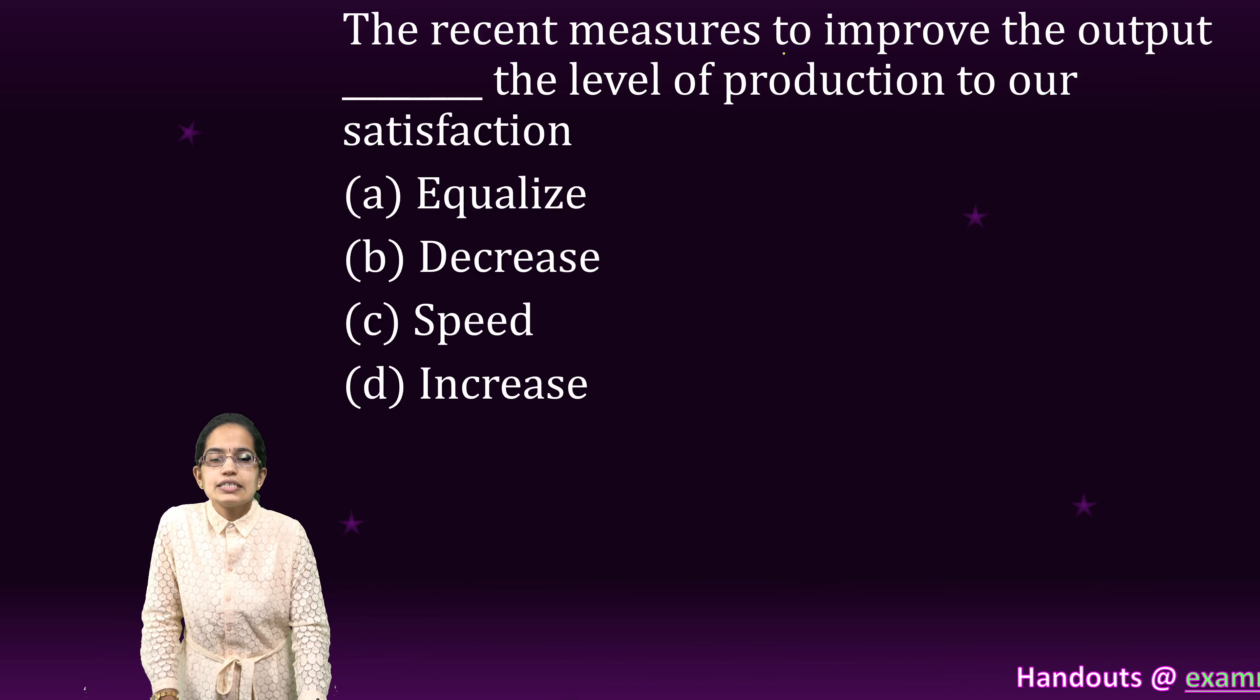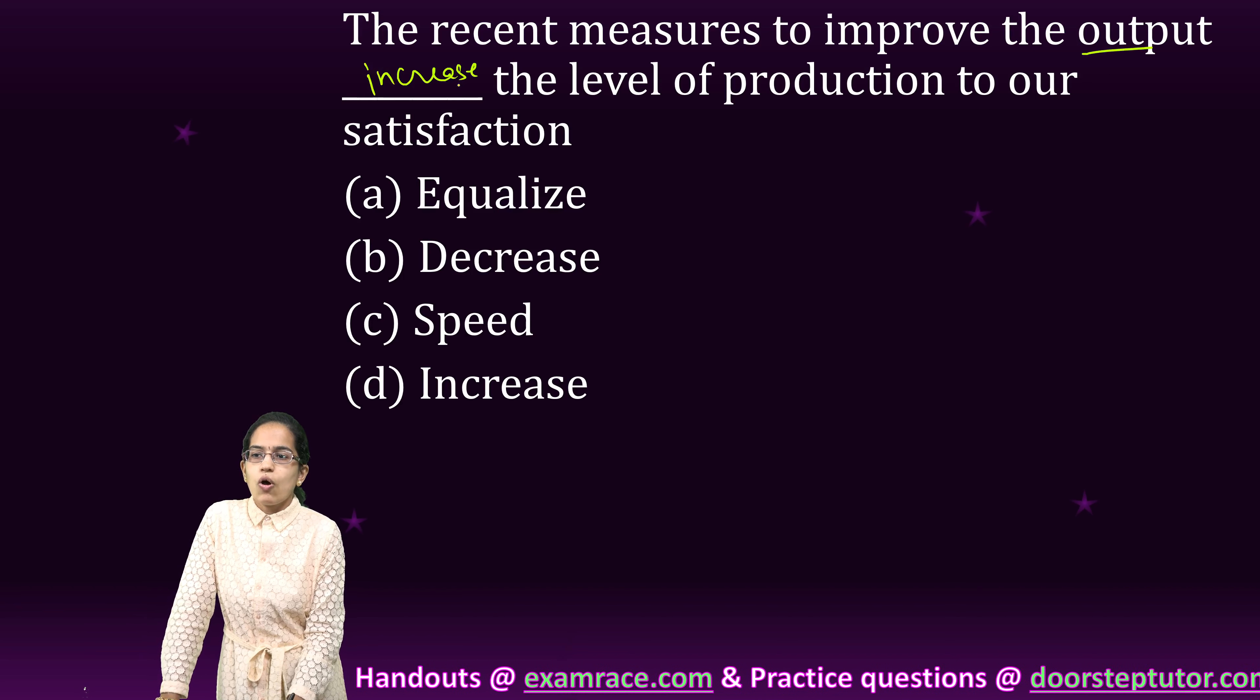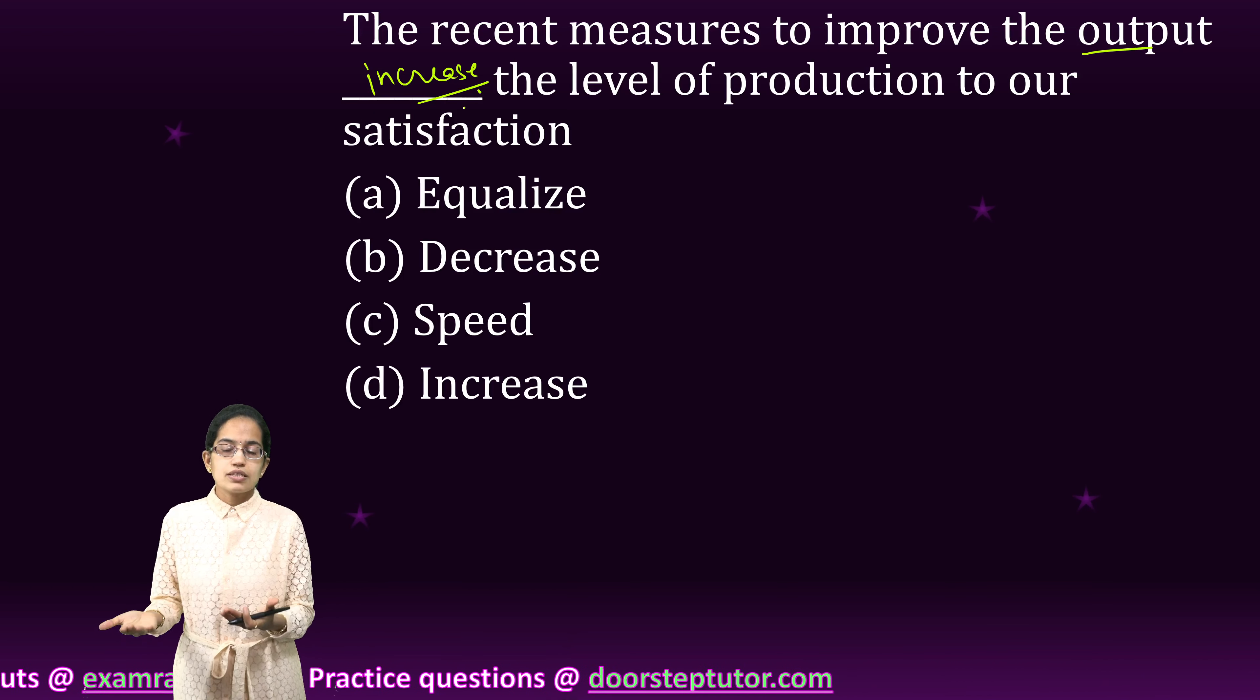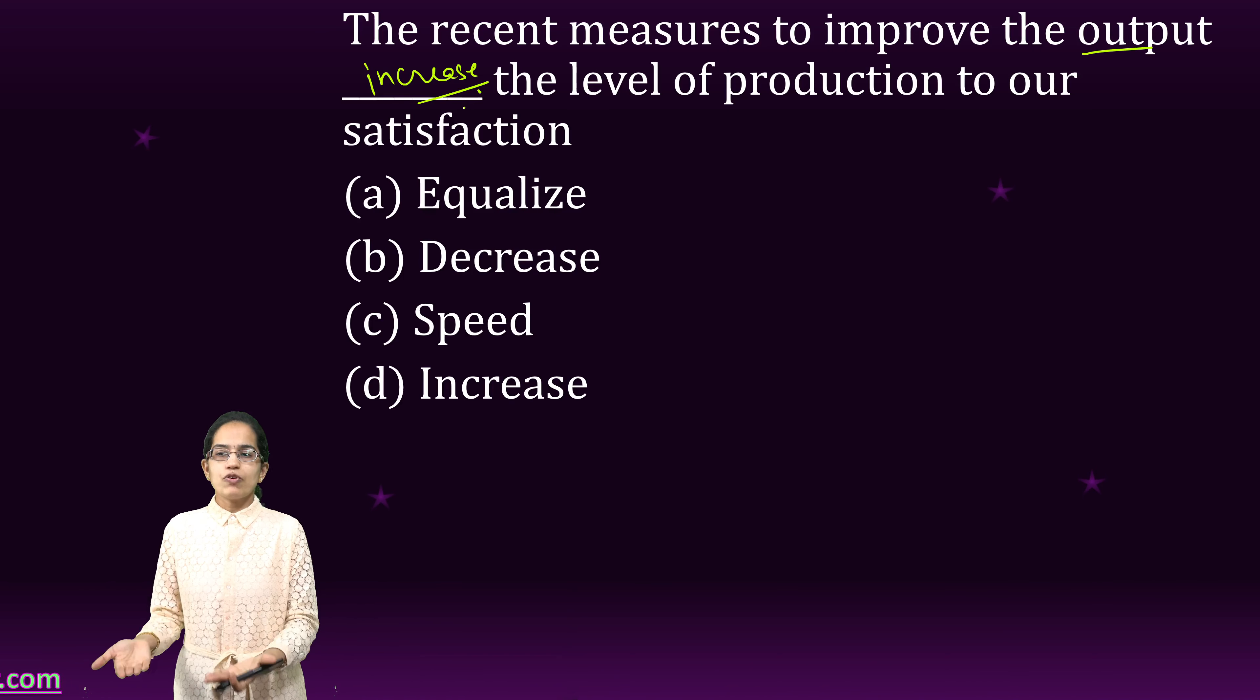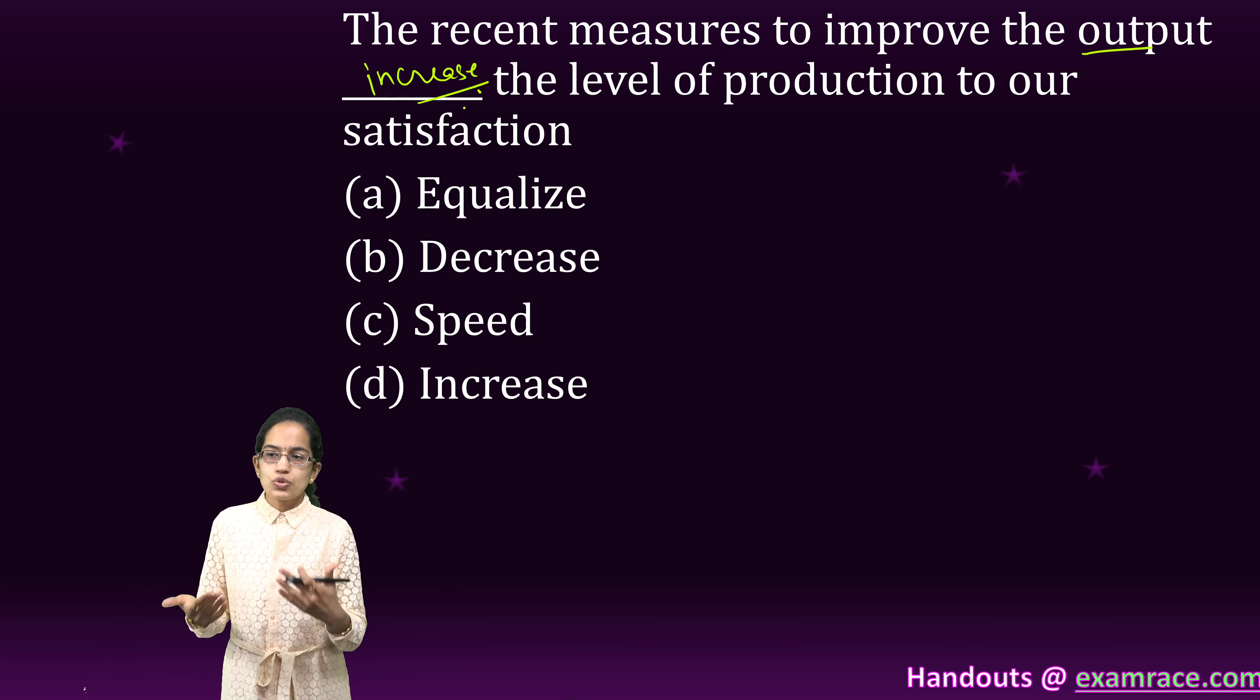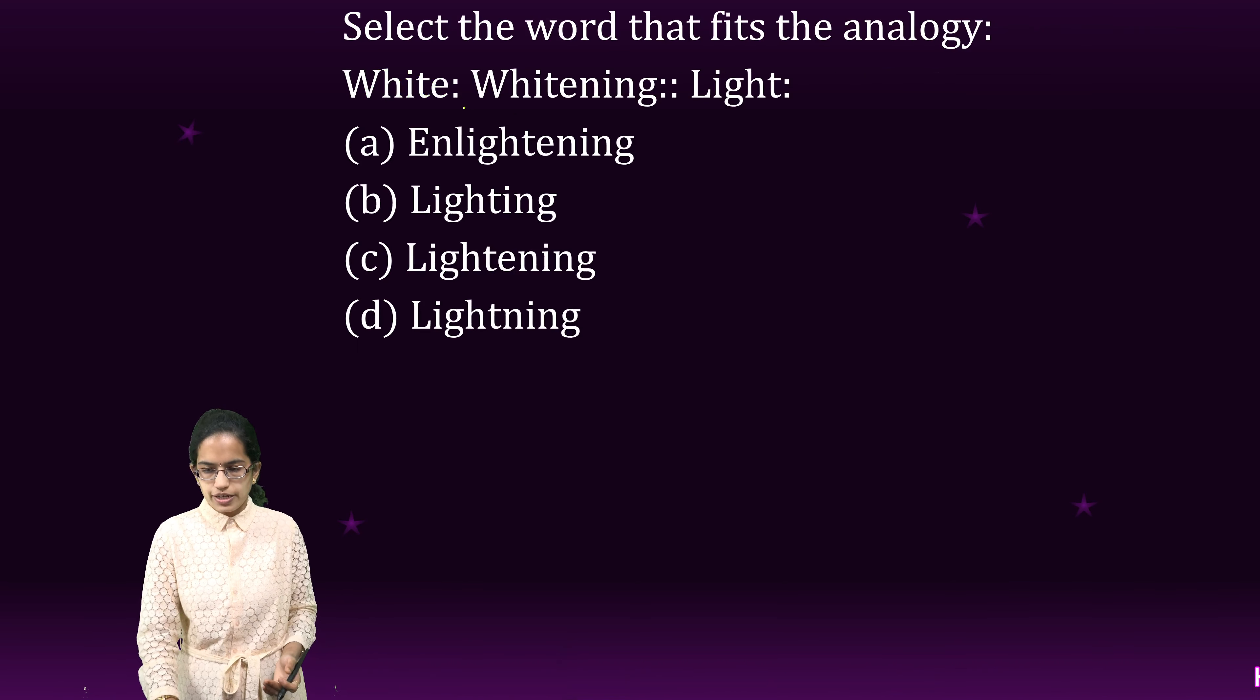The next is: the recent measures to improve the outcome increases the level of production to our satisfaction. So I am trying to improve the output or the outcome, and for that I am trying to increase the level of production to our satisfaction, and then only the improvement in the outcome can be seen. So increase would be the right option.